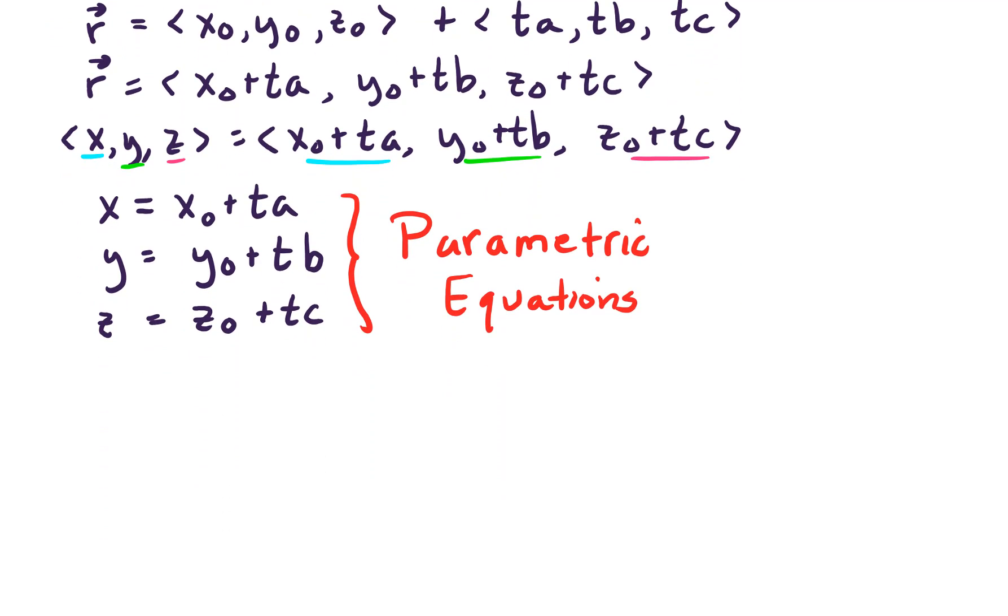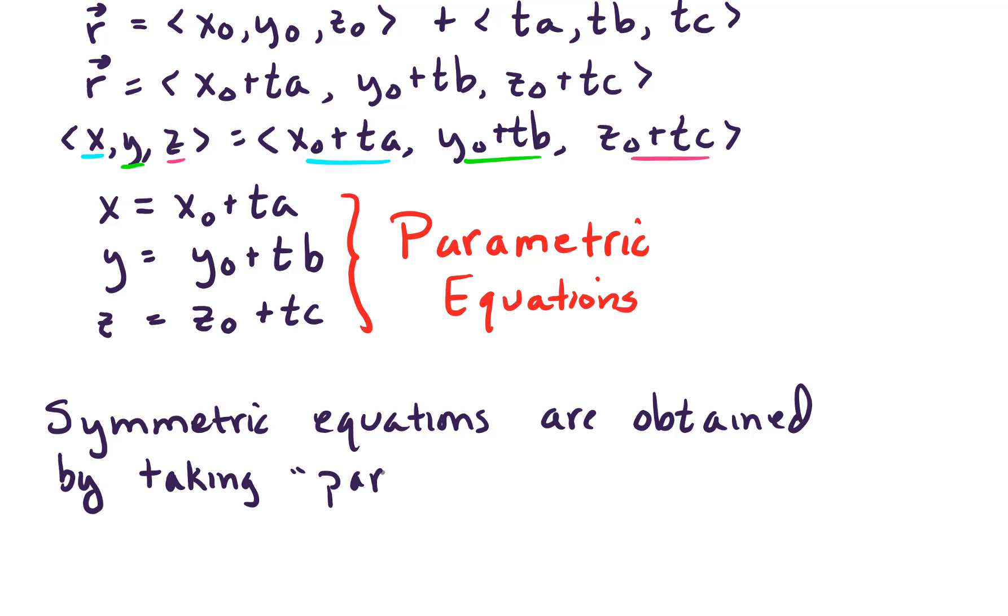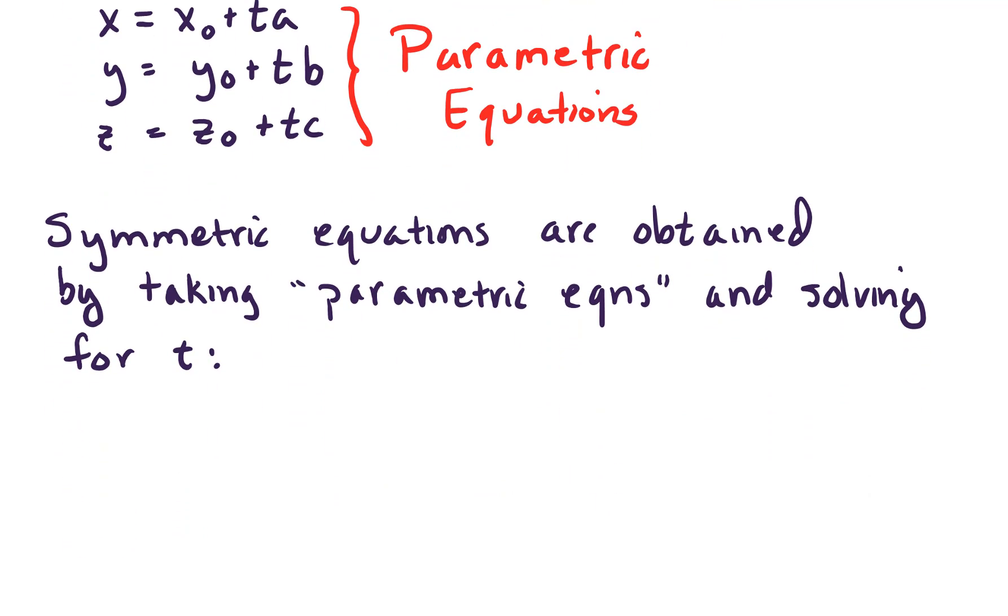Lastly, instead of writing parametric equations, we could write symmetric equations. So symmetric equations are obtained by taking the parametric equations and solving for T. So let's do that.